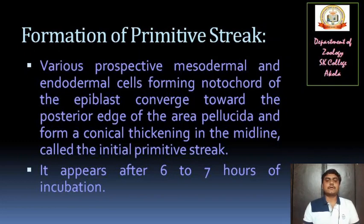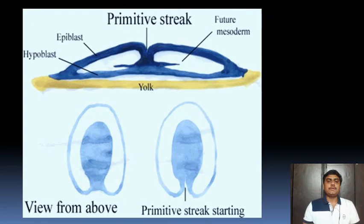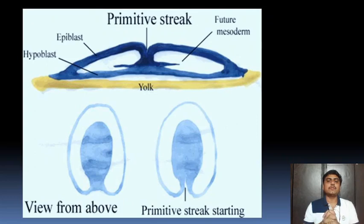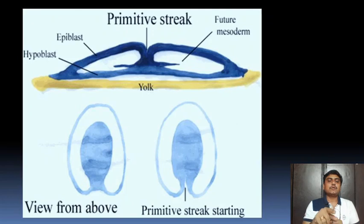The initial primitive streak appears after 6 to 7 hours of incubation of the egg. Viewed from above, and also in the lateral view, you can see in the upper diagram the epiblast cells, hypoblast cells, and the future mesoderm getting their shape. On the above surface of the egg, the embryo is getting formed and primitive streak formation has started.